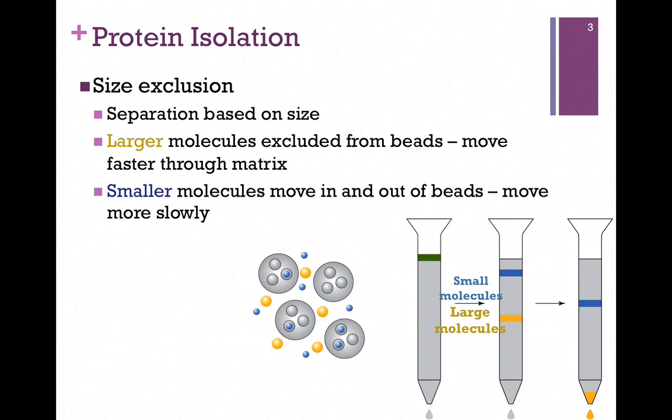However, imagine instead you leave your home, and instead of going directly to the bus stop, you go inside and outside of all of the buildings. You'll get there at a delayed rate. And so that's why the small molecules come off last, because they spend some time inside the bead, and that delays their progress through the column. So again, in size exclusion chromatography, the larger molecules elute or come off the column first.